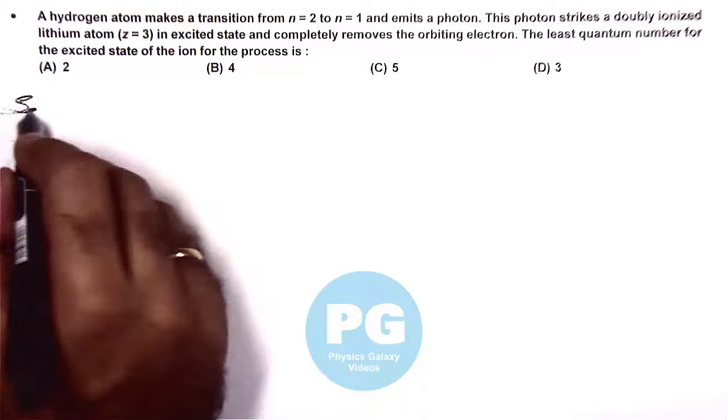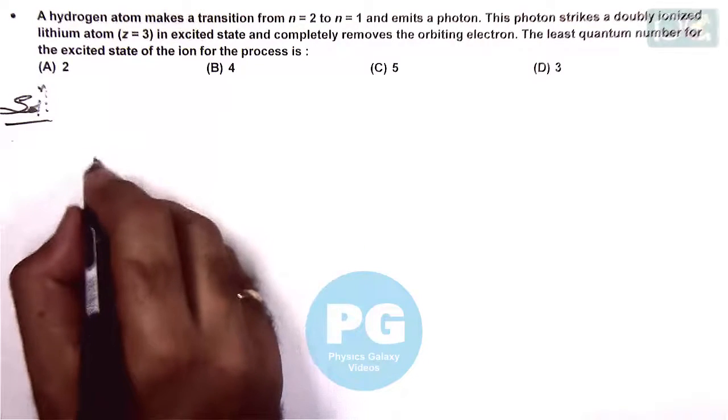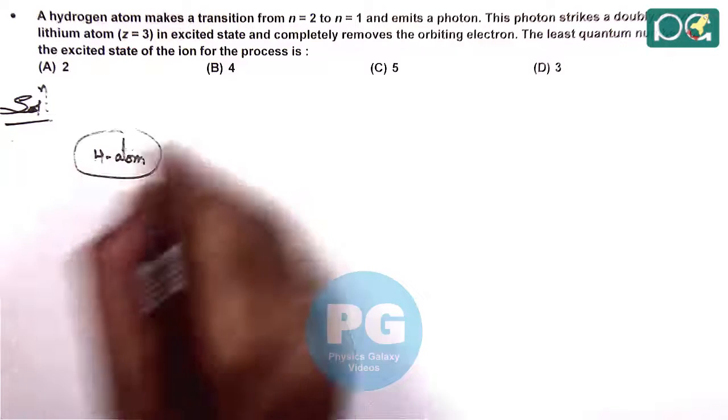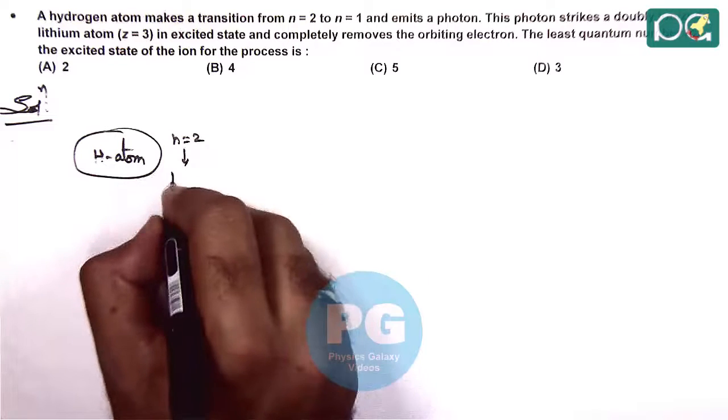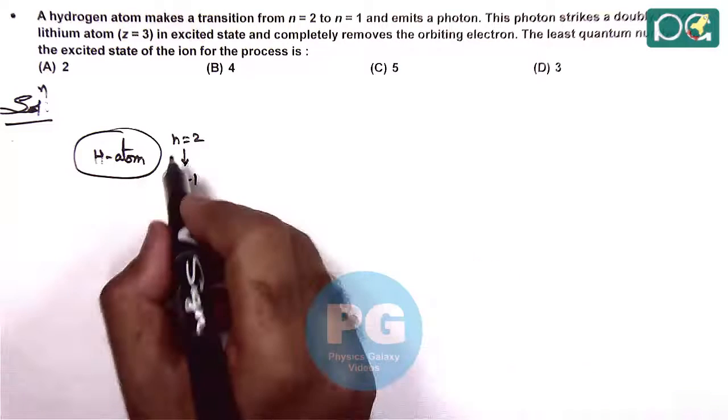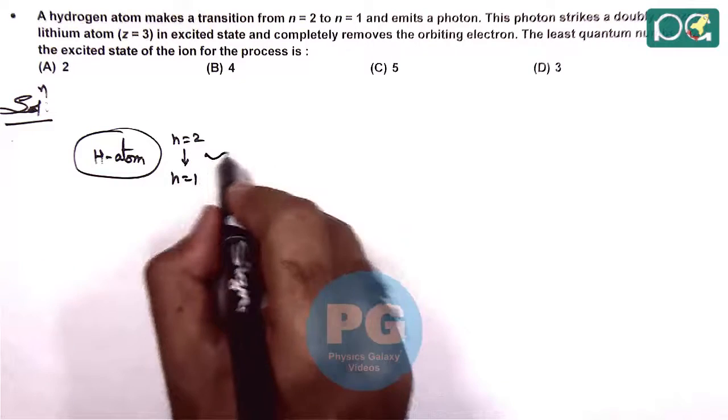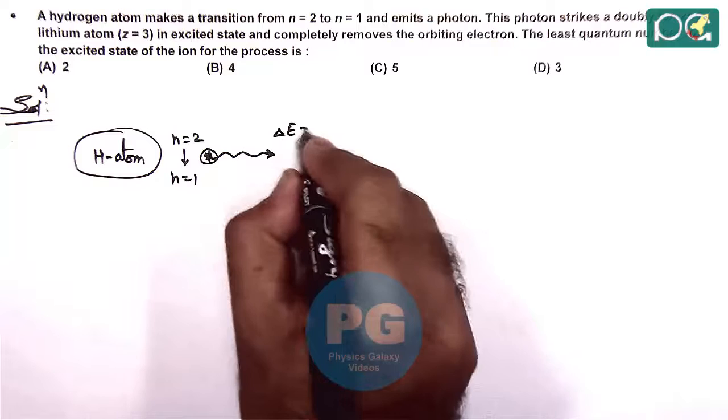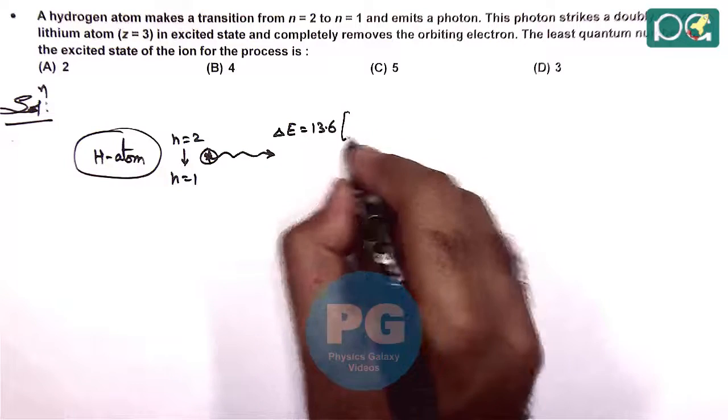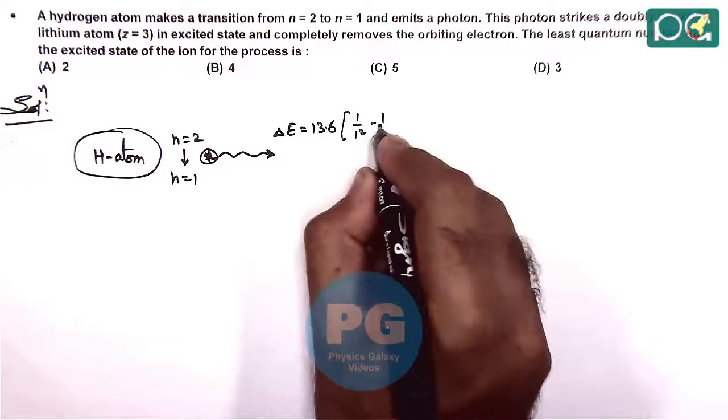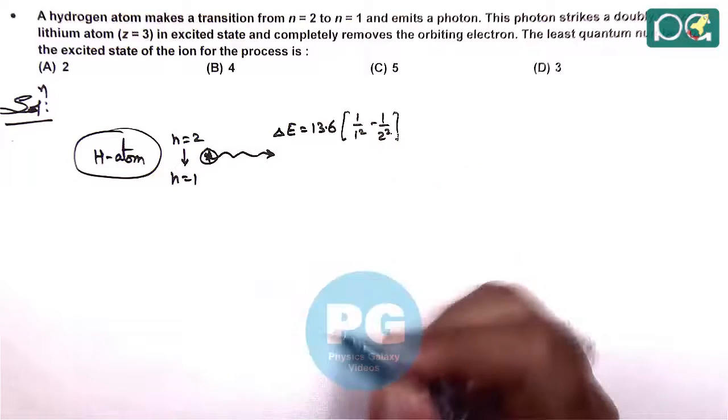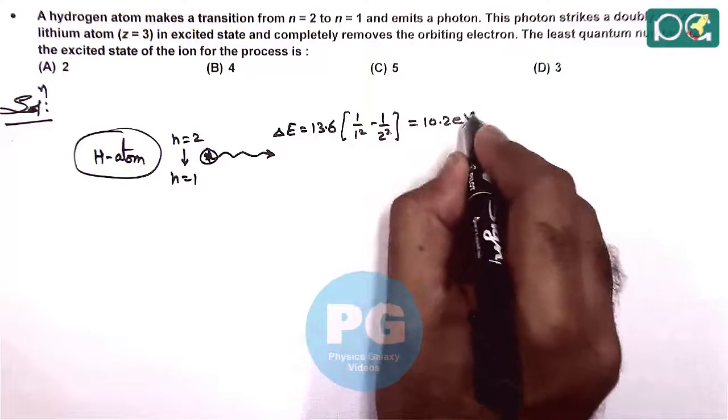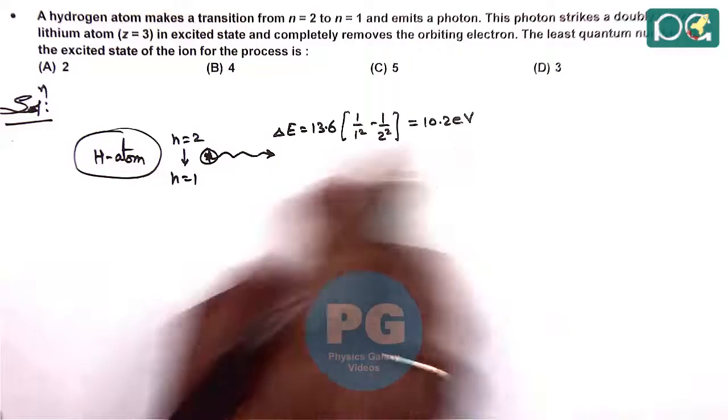If we visualize the situation, we have a hydrogen atom making a transition from n=2 to n=1. For this transition, the emission of a photon has energy ΔE = 13.6(1/1² - 1/2²). This energy equals 10.2 electron volts.